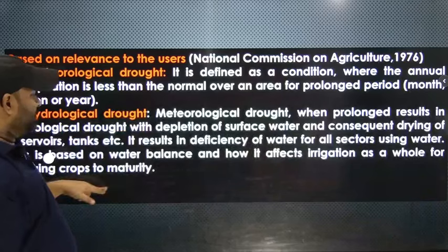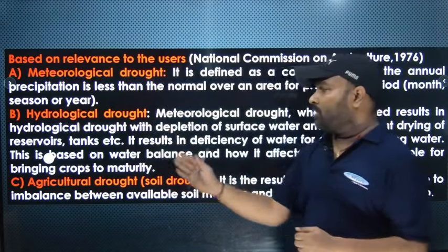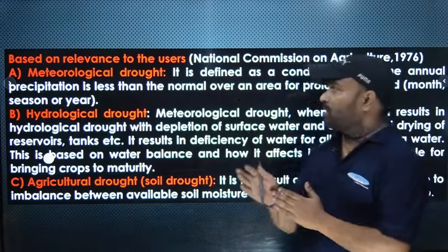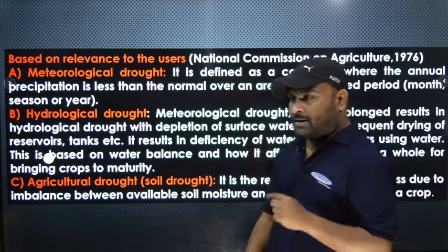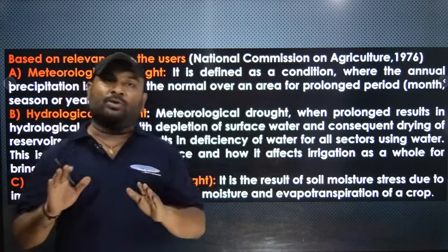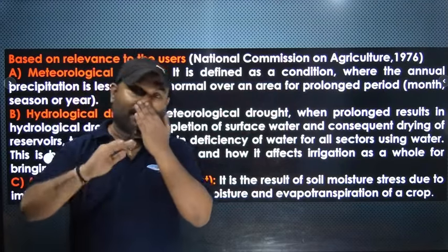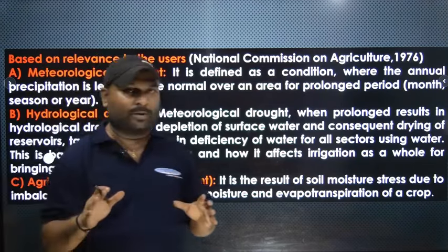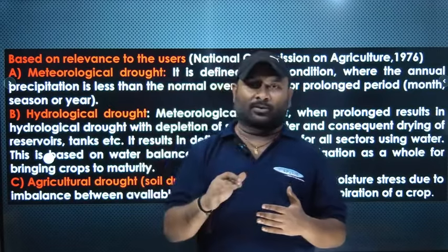Drought has different types: meteorological drought, hydrological drought, and agricultural drought. First, meteorological drought — in a particular area, if the amount of rainfall remains very low for a long period of time, that is called meteorological drought. The rainfall in that area is persistently below normal for an extended duration.